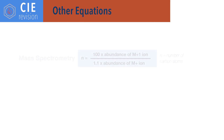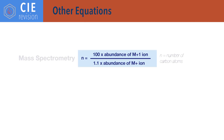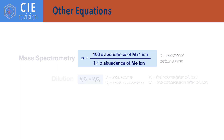Other equations. N equals 100 times abundance of M+1 ion divided by 1.1 times abundance of M+ ion, where N is the number of carbon atoms. Initial volume times initial concentration equals final volume times final concentration — this is useful for calculating volumes needed for dilutions.